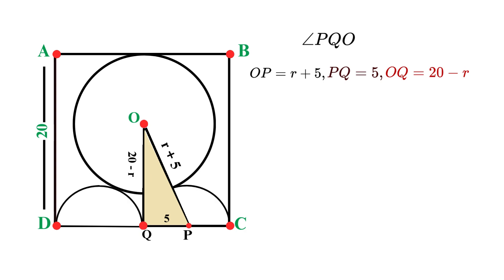For the right triangle PQO, the Pythagorean theorem states that the square of the hypotenuse equals the sum of the squares of the two legs. So we can write it as OP squared equals PQ squared plus OQ squared. Now let's substitute our known values. We have OP, which is R plus 5, PQ, which equals 5, and OQ, that is 20 minus R. So by putting the values, our equation becomes (R + 5)² = 5² + (20 - R)².